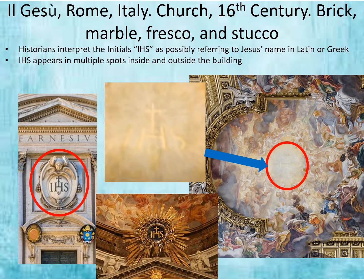The initials IHS appear in many different places in Il Gesù: on the exterior, at the center of the holy light in the ceiling fresco, and also on a beautiful gilded emanating decorative medallion at the base of the apse fresco. IHS possibly refers to Jesus' name in either Latin or Greek, and it does appear in multiple spots throughout, both inside and outside the building.